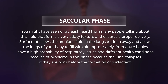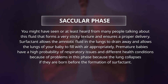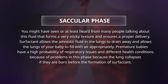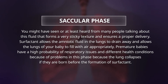Many people talk about this fluid that forms a very sticky texture and ensures a proper delivery. Surfactant allows the amniotic fluid in the lungs to drain away and allows the lungs of your baby to fill with air appropriately. Premature babies have a high probability of respiratory issues and different health conditions because of problems in this phase, because the lung collapses if they are born before the formation of surfactant.